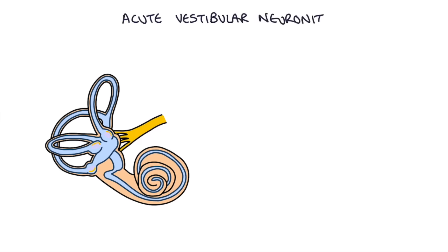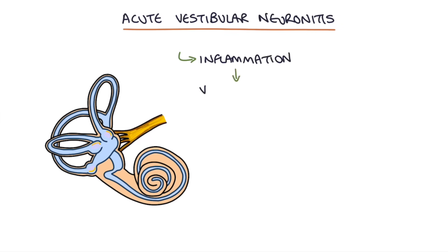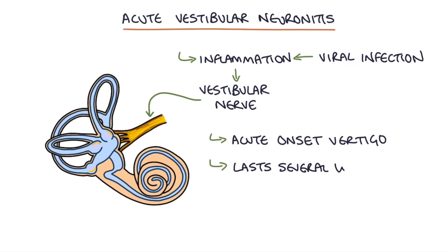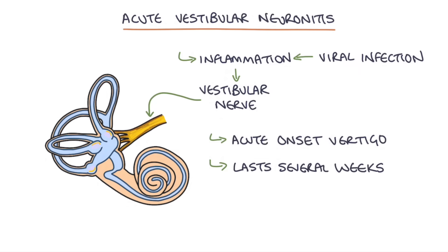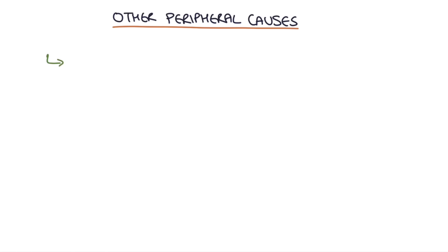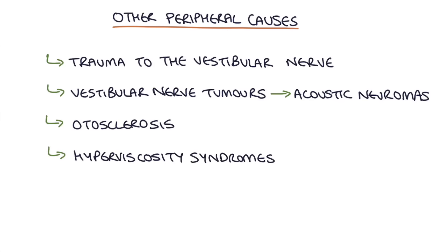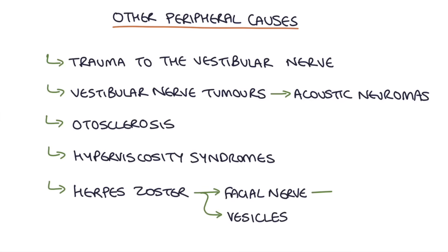Acute vestibular neuronitis describes inflammation of the vestibular nerve, usually attributed to a viral infection, though it can occur without other symptoms of infection. The disruption to vestibular nerve function leads to a mismatch in signals to the brain causing vertigo. Typically the history is an acute onset vertigo lasting several weeks before gradually resolving. Other peripheral causes include trauma to the vestibular nerve, vestibular nerve tumours particularly acoustic neuromas, otosclerosis, hyperviscosity syndromes, and herpes zoster infection which can occur with facial nerve weakness and vesicles around the ear, known as Ramsay Hunt syndrome.